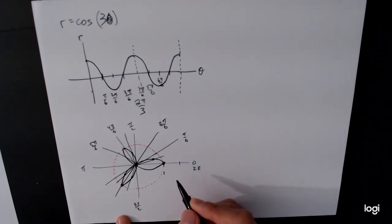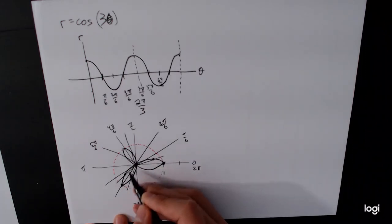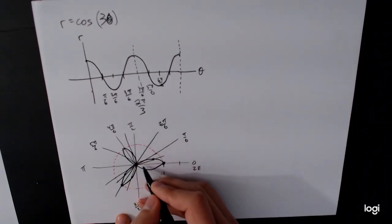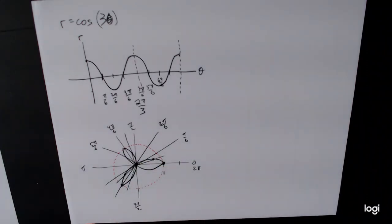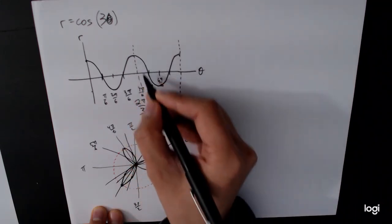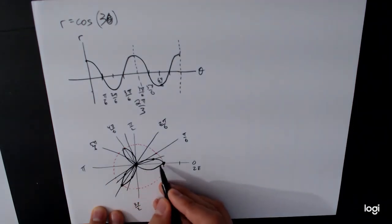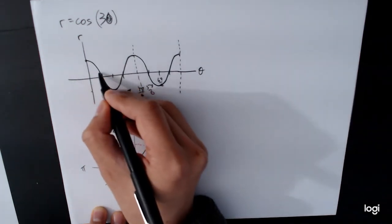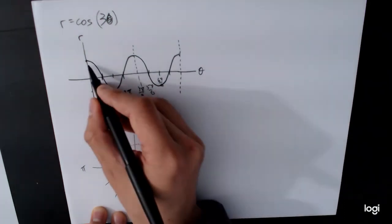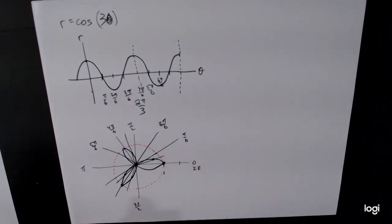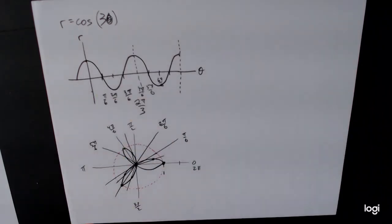The question asks us to give an interval that describes one loop of the graph. We can see there are three different loops, and we only want one — we have a choice of which one to pick. This part of the graph came from between 5 pi over 6 and pi, which corresponds to that portion of the r vs. theta graph. Using colors to match each loop to its interval helps clarify which piece corresponds to which.